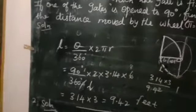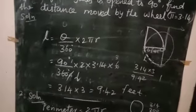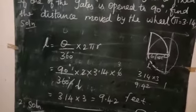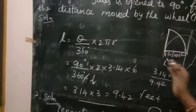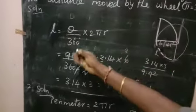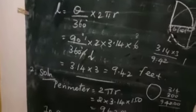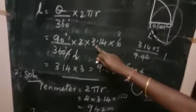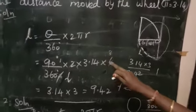Length of arc formula is theta divided by 360 degrees times 2 pi r units. Here given, it makes 90 degrees. So theta equals 90 degrees divided by 360 times 2 times pi value 3.14 times r.